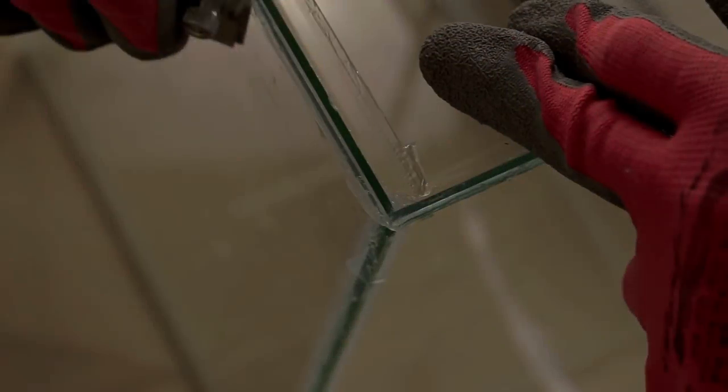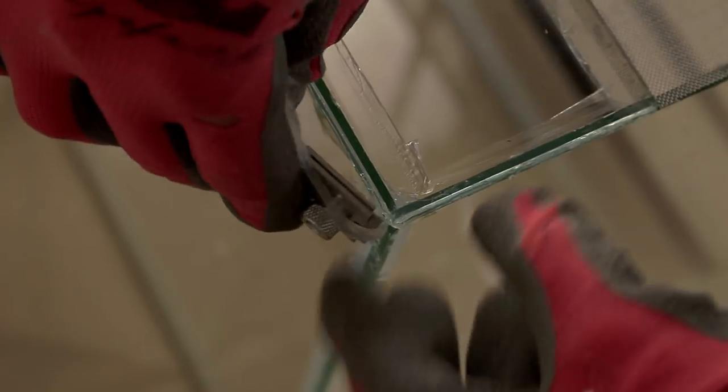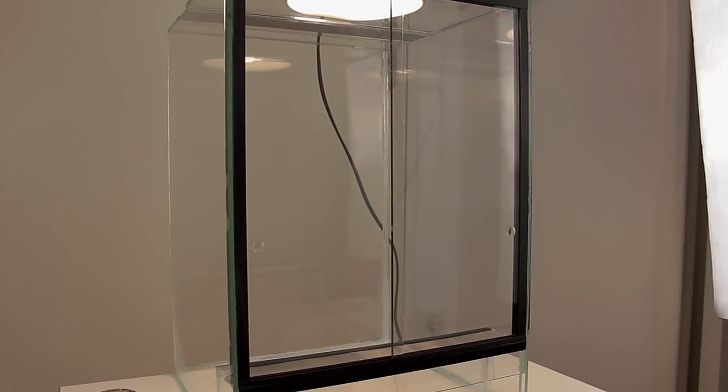To finish, I can replace my doors. The last step consists of cleaning all the tank because there is some spilling everywhere, fingerprints and dust. So I use a scraper with a brand new blade to remove all spilling at the intersection and everywhere the sealant is, and I clean with acetone. Our glass terrarium is now complete.